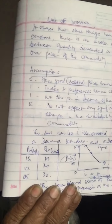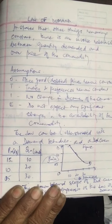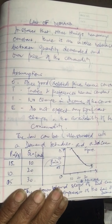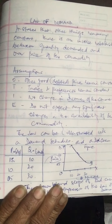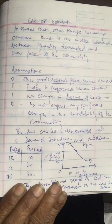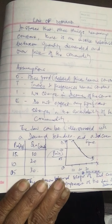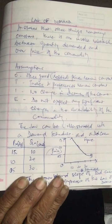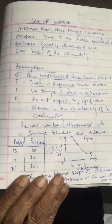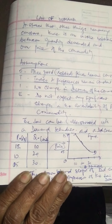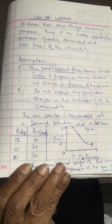Have a look at this. The law of demand can be explained with the help of the following demand schedule. We have taken the price as 15 — when the price is 15, the units demanded are 10. When the price falls to 10, the demand increases to 20, and when the price falls to 5, the quantity increases to 30.